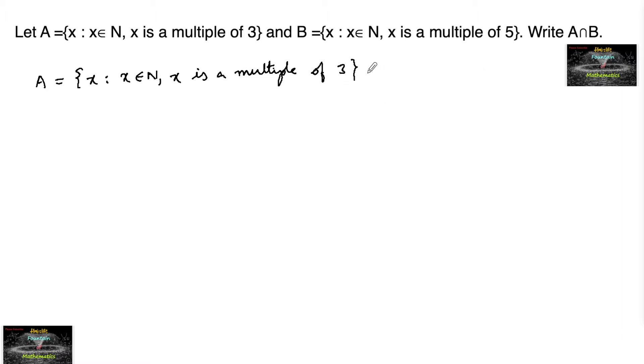So this is in set builder form. We can write in roster form as multiples of 3 can be taken: 3, 3 ones are 3, 3 twos are 6, 3 threes are 9, 3 fours are 12, 3 fives are 15, 3 sixes are 18 and so on.